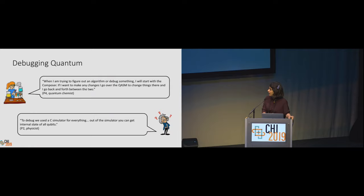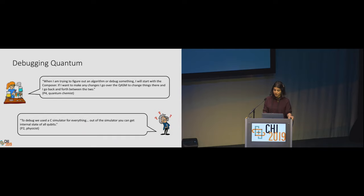As with any development workflow, debugging is a part of the quantum computing process. One participant described how she debugged her code by switching among different tools: 'When I'm trying to figure out an algorithm or debug something, I will start with a Composer, and if I want to make any changes, I go over to QASM, which is quantum assembly language, to change things there, and I go back and forth between the two.' Another described using a quantum simulator for debugging as it enabled viewing the internal state of all the qubits: 'Out of the simulator, you can get the internal state of all the qubits.' A deeper understanding of how quantum programmers conduct the debugging process would provide opportunities for developing new kinds of quantum debugging tools, building on previous research that demonstrates best practices for scientific computing.